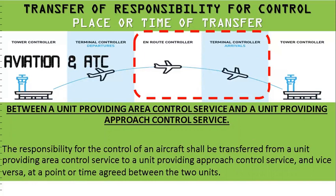Transfer of responsibility for control between a unit providing area control service and a terminal control unit: this will be based upon a particular point or time agreed between the two units. For example, if the terminal controller is responsible up to 50 nautical miles and from the ground to flight level 150, once the aircraft passes flight level 155 — as agreed — it must be released to the terminal controller. The transfer point can be defined by vertical limits or lateral limits such as 50 nautical miles.